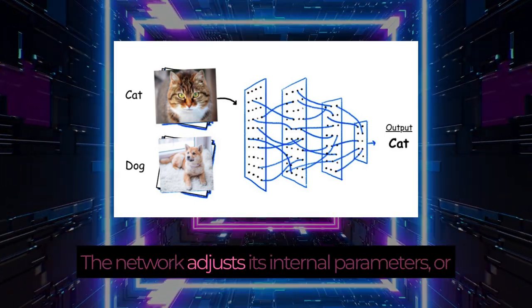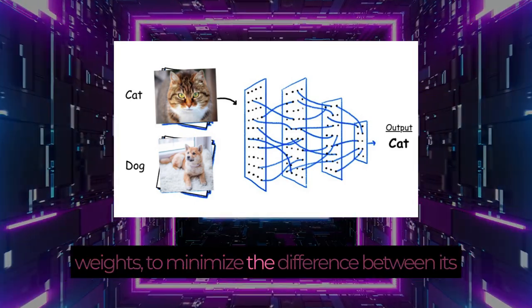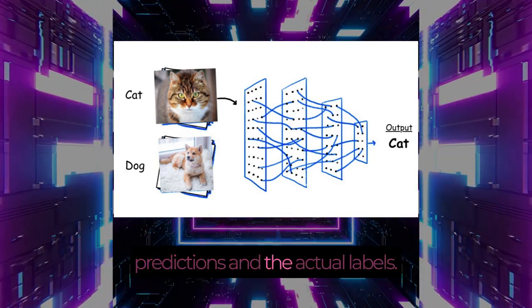The network adjusts its internal parameters, or weights, to minimize the difference between its predictions and the actual labels.